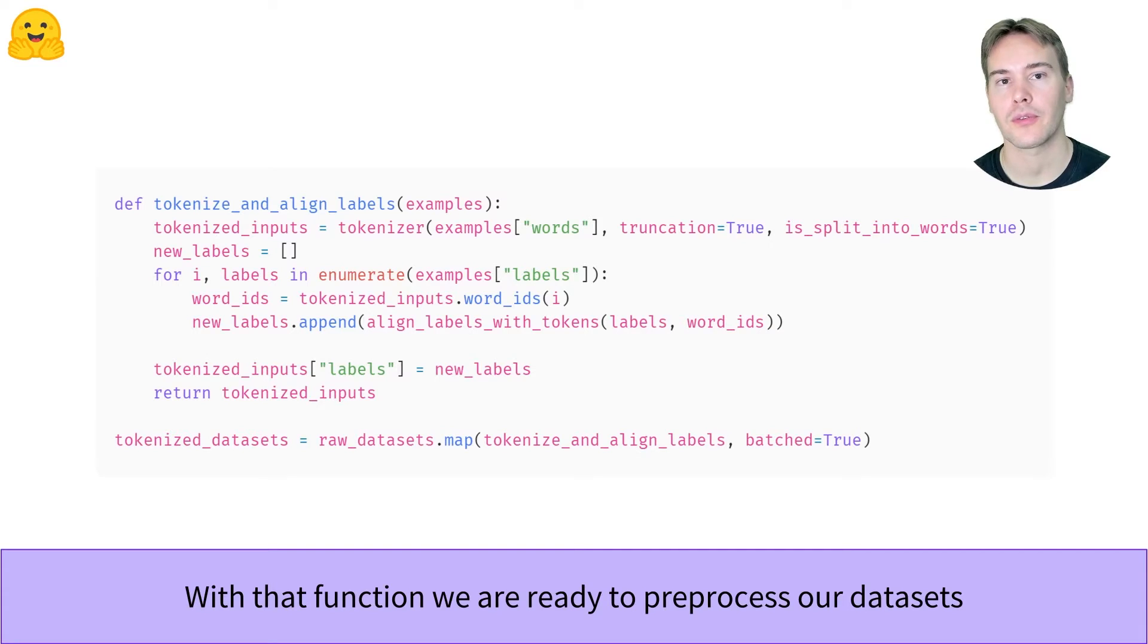Once that function to create our labels is written, we can preprocess the whole dataset using the map function. With the option batch equal true, we unleash the speed of our fast tokenizers.